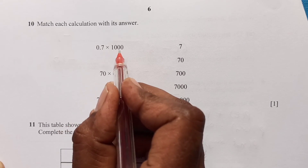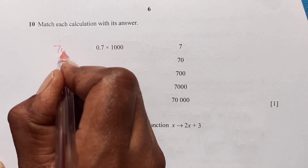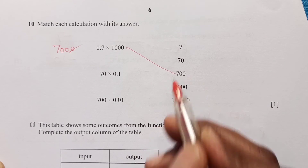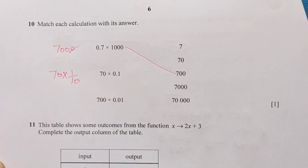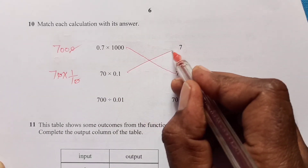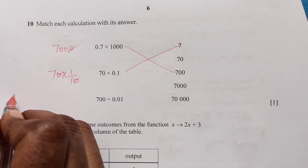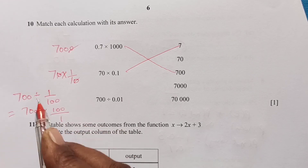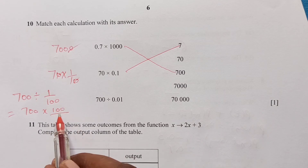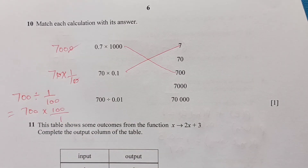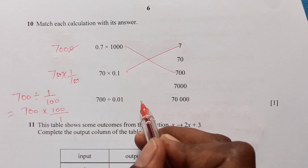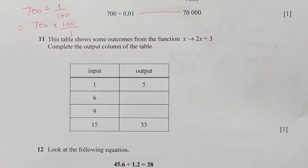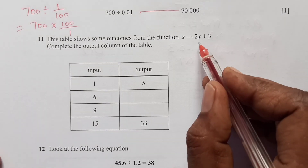Question ten: match each calculation with its answer. Seven times 1000 is 7000; with one decimal place, it becomes 700. Seventy times one-tenth: the zero cancels, leaving 7. For 700 divided by one-hundredth, that is 700 times 100, giving 70000. Match each result to the corresponding value on the right side.